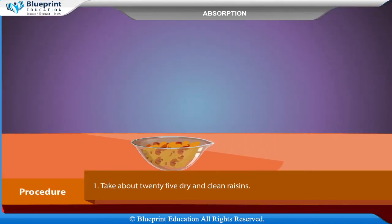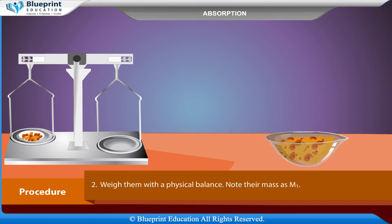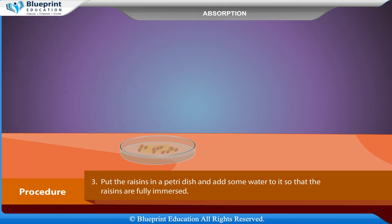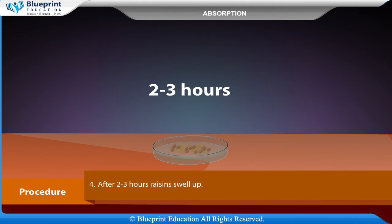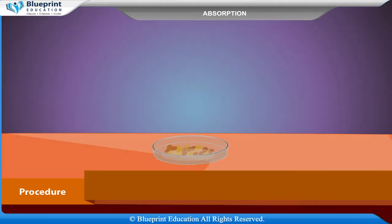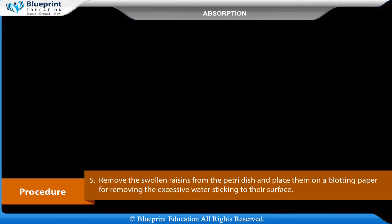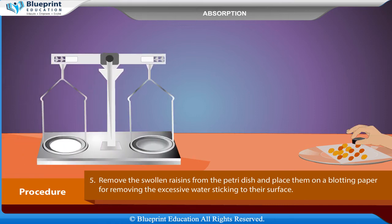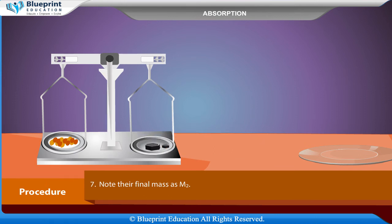Procedure: Take about 25 dry and clean raisins and weigh them with a physical balance. Note their mass as M1. Put the raisins in a petri dish and add some water so that raisins are fully immersed. After 2-3 hours, the raisins swell up. Remove the swollen raisins from the petri dish and place them on a blotting paper to remove excessive water sticking to their surface. Weigh the swollen raisins and note their final mass as M2.